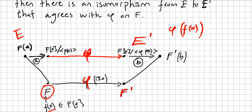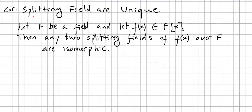This line here represents our theorem: there will be an isomorphism from E to E prime that agrees with phi on F. Quick corollary for our theorem — splitting fields are unique. Let F be a field and let F of X be in the ring of polynomials; then any two splitting fields of F of X over the field are isomorphic.